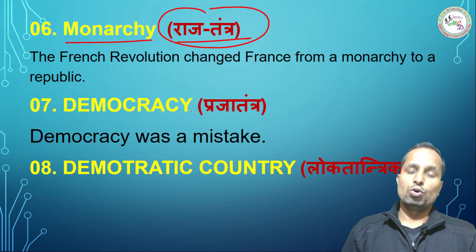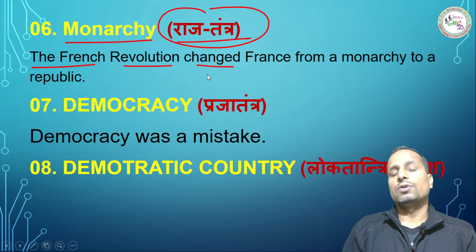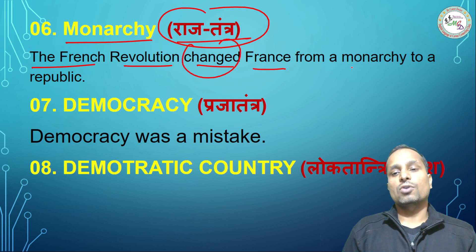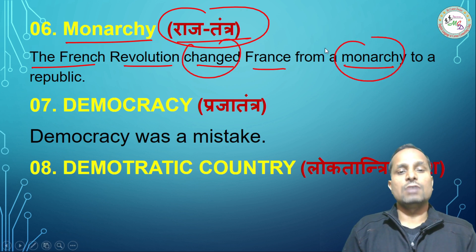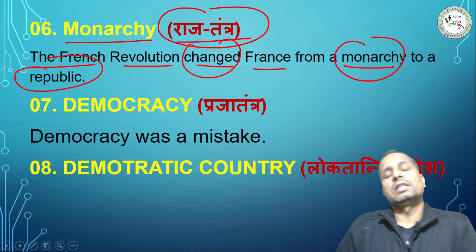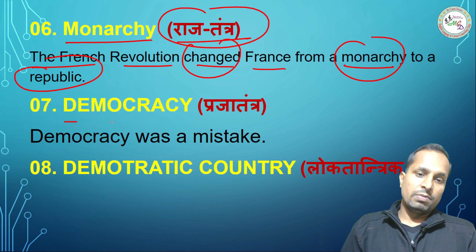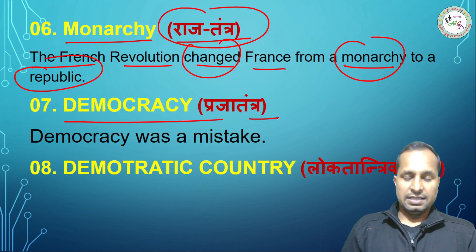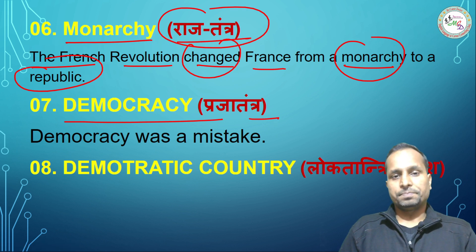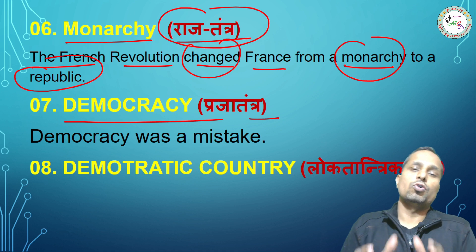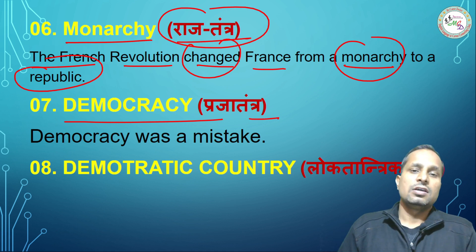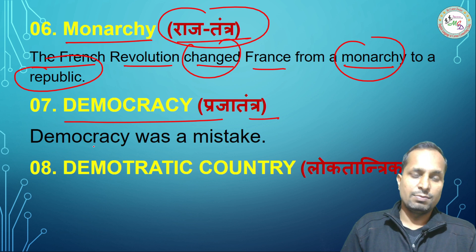The next word is 'Monarchy.' Monarchy का मतलब है राजतंत्र। The French Revolution changed France from a monarchy — राजाओं का शासन — to a republic. A related word is 'Democracy,' which means प्रजातंत्र। Republic and Democracy can be used as synonyms. In a democracy, the government rules in favor of the people, not any one individual.